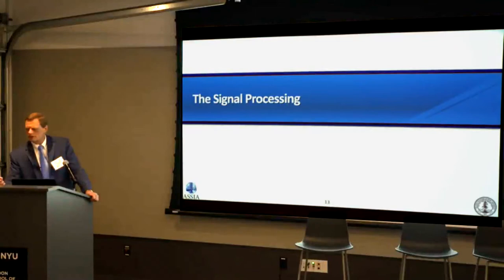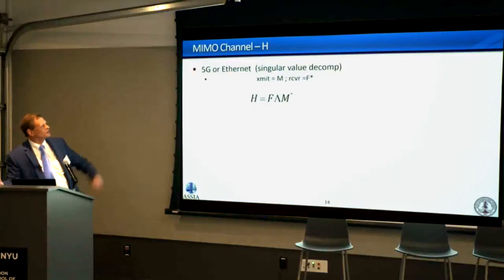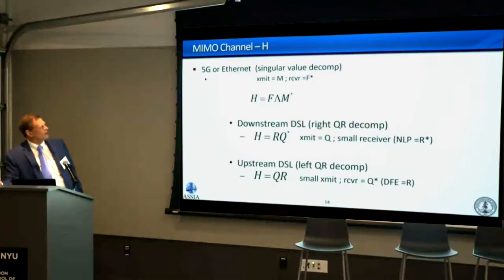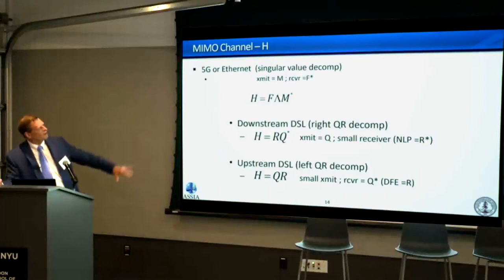For the signal processing: if you have a channel H like that, you can perform singular value decomposition, which is important for defining the optimal transmitter and receiver for a single user. For single-sided systems where all transmitters are in one place — like downstream in a binder — but receivers may be in different places, QR factorizations of the same matrix H help define the optimum transmit-receiver systems. From that you can compute the achievable data rates.